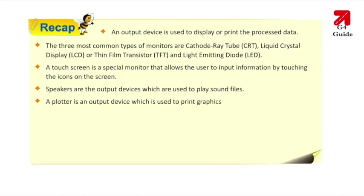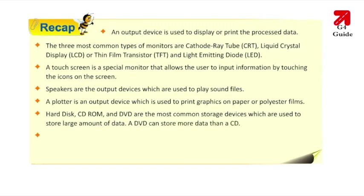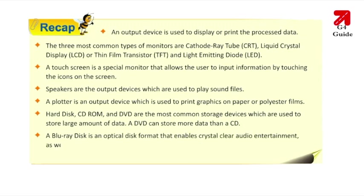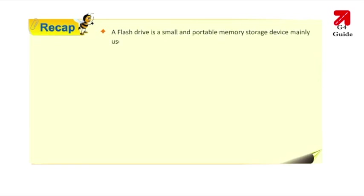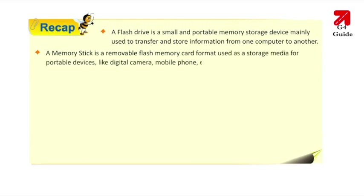Hard disk, CD, and DVD are the most common storage devices for storing large amounts of data. A DVD can store more data than a CD. A Blu-ray Disc is an optical disc format that enables crystal-clear audio and high-definition video, storing more data than DVD and CD. A flash drive is a small, portable memory storage device used to transfer and store information between computers. A memory stick is a removable flash memory card used as storage media for portable devices like digital cameras and mobile phones.